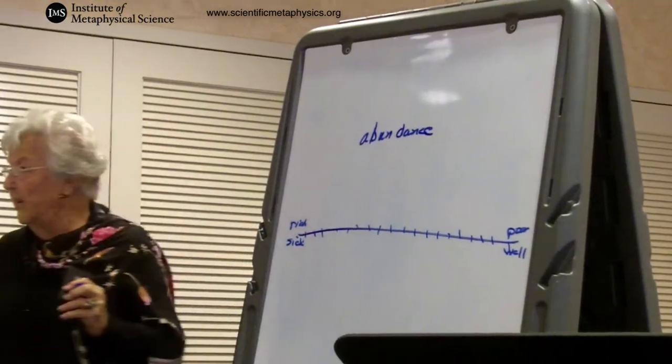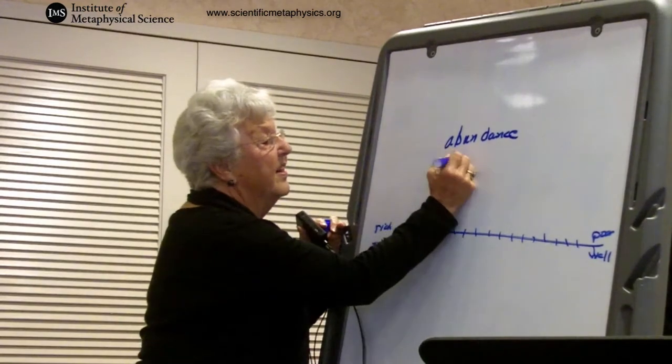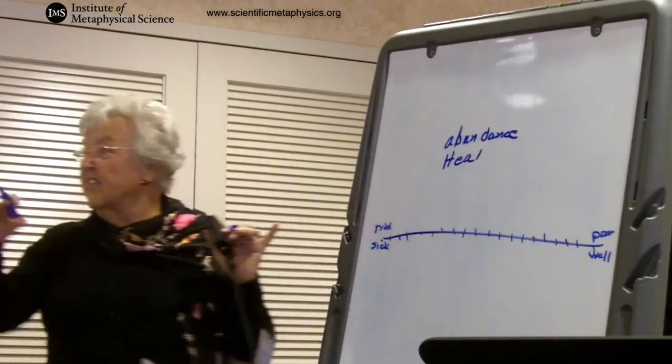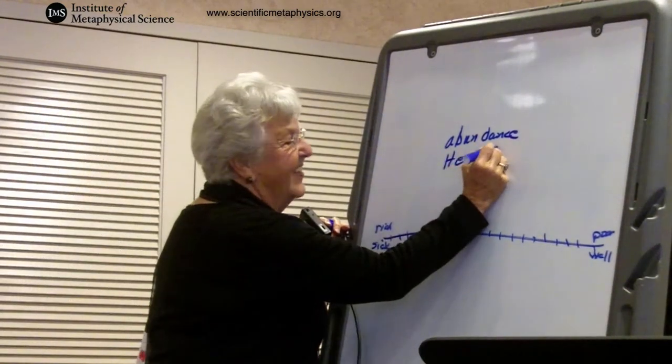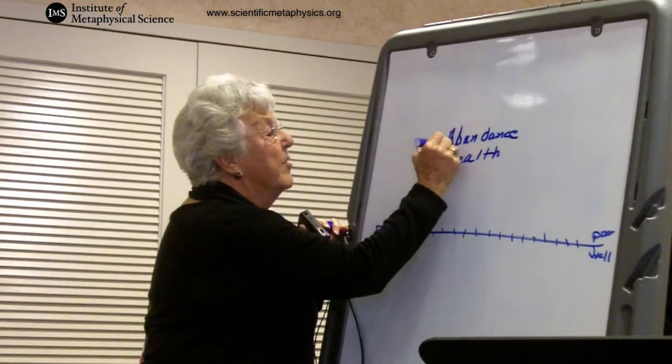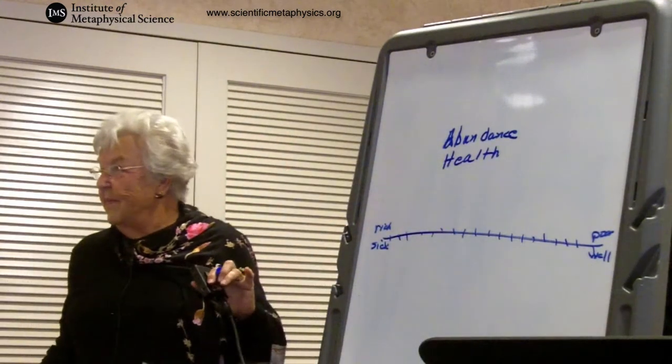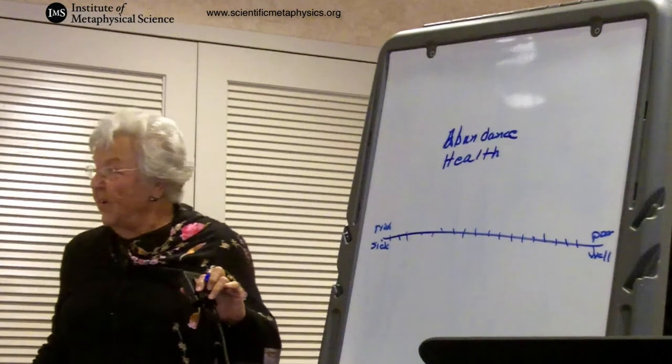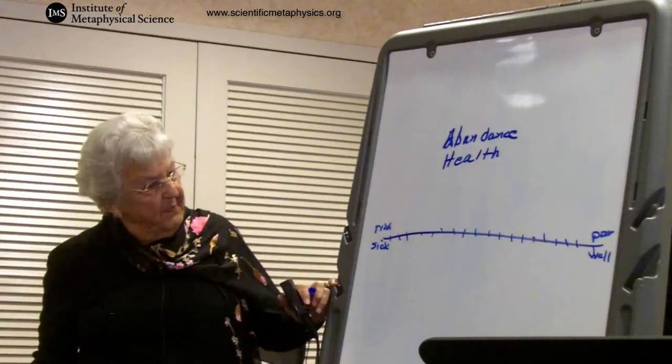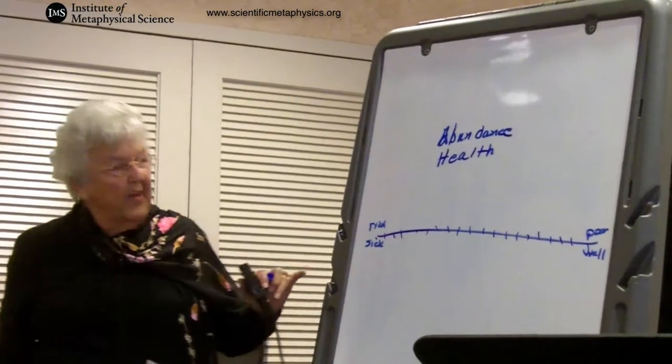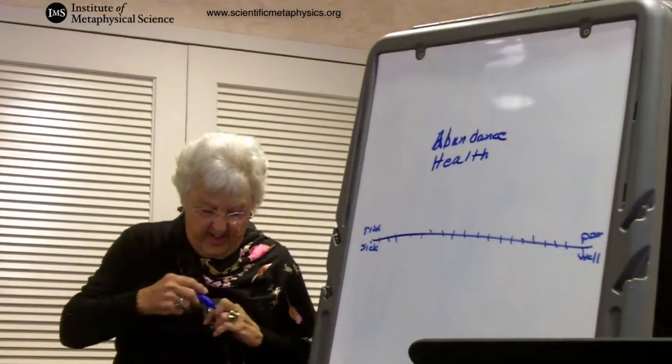What about sick well? Health. Yeah. I should have put... This is a gifted class. And this should have been a capital A there. Abundance. Health. Asking trick questions. I'm always asking trick questions.